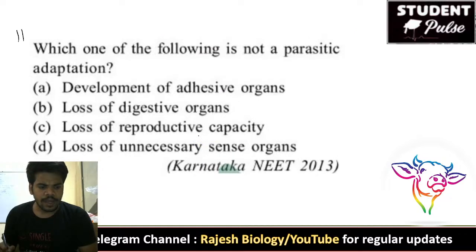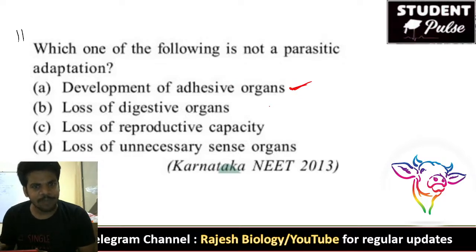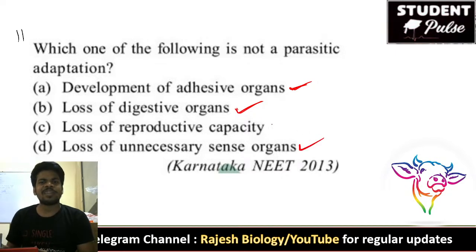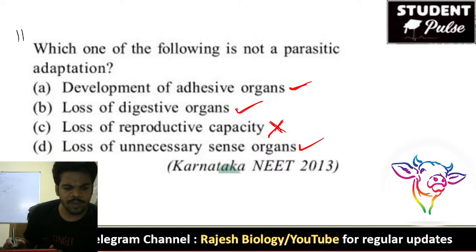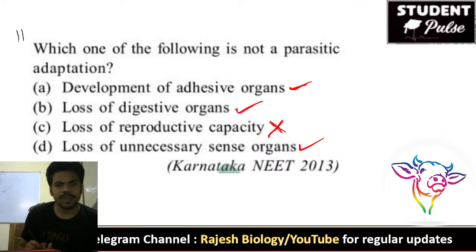Tenth question: which of the following is NOT a parasitic adaptation? Adhesive organs being developed is a parasitic adaptation. Loss of digestive system is a parasitic adaptation. Loss of unnecessary sense organs is also a parasitic adaptation. But loss of reproduction is NOT a parasitic adaptation — parasites develop more power to reproduce and increase their number. So the right answer is C.